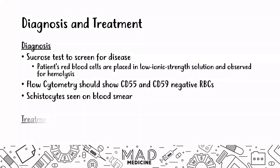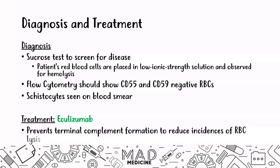When it comes to treatment, you can use a drug called eculizumab. Eculizumab is going to prevent the terminal complement formation to reduce the incidence of red blood cell lysis. This is very high yield — you need to know what drug you are going to use to treat patients who have PNH.